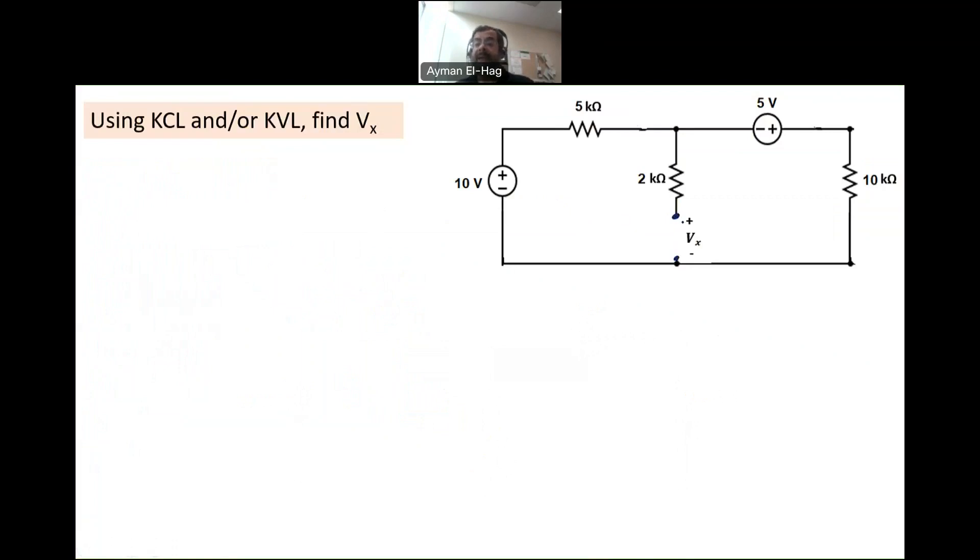This is Vx. Finding a voltage in an open circuit sometimes is confusing to students, because the current in an open circuit is equal to zero. Sometimes students confused with the current equal to zero and they assume that the voltage would also be equal to zero. And that's wrong.